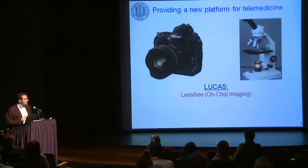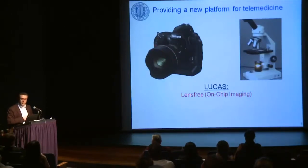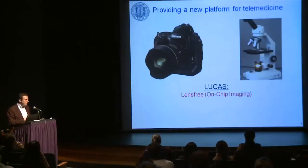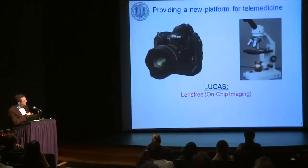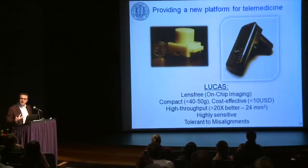The first striking feature of LUCAS technology that makes it quite different from an existing microscope is that it's lens-free. We do microscopy without lenses. This makes it very cost-effective, compact, and lightweight. If you go to Best Buy or any digital camera store to buy a high-end digital camera, the most expensive part is the front-end lens. The same is true for conventional microscopes — a good microscope comes with these objective lenses, which are expensive and relatively heavy. Our platform entirely gets rid of those lenses so that it becomes very compact.